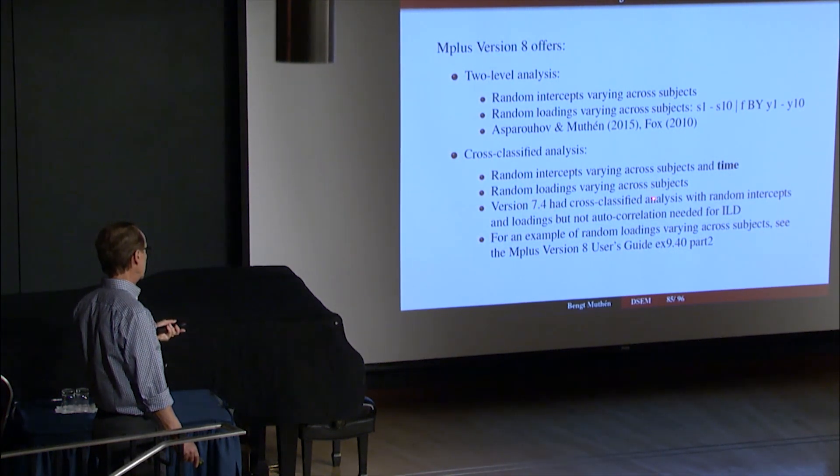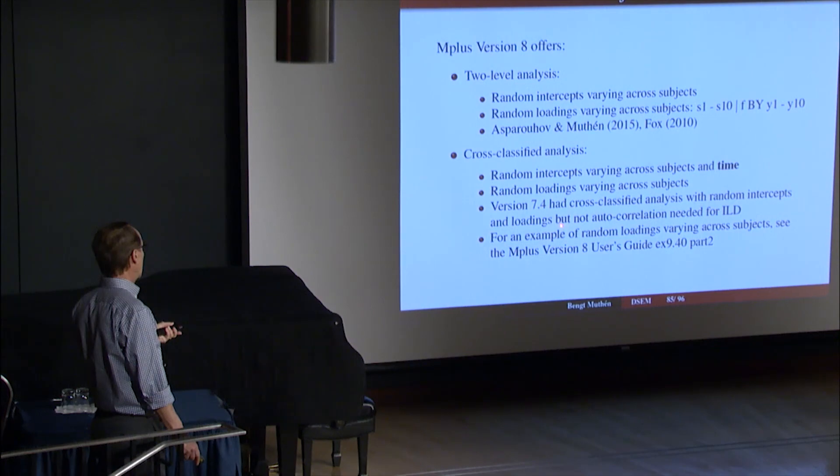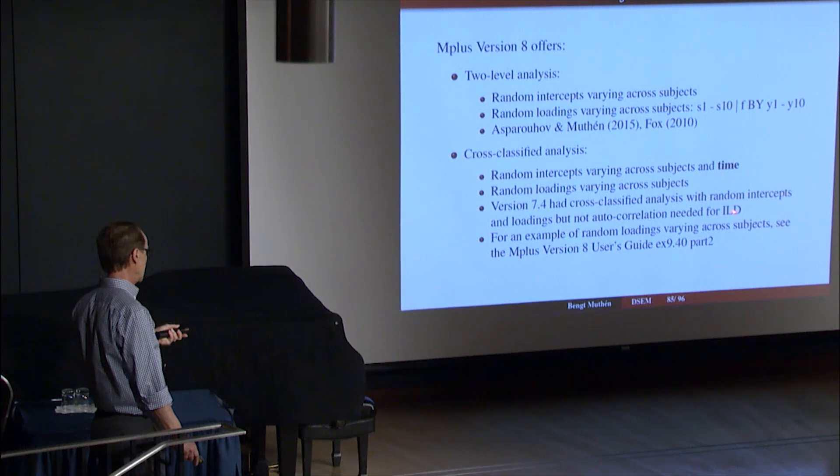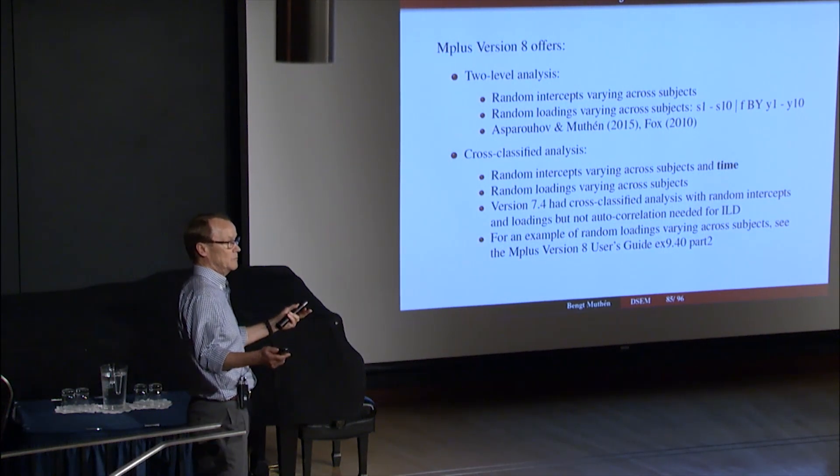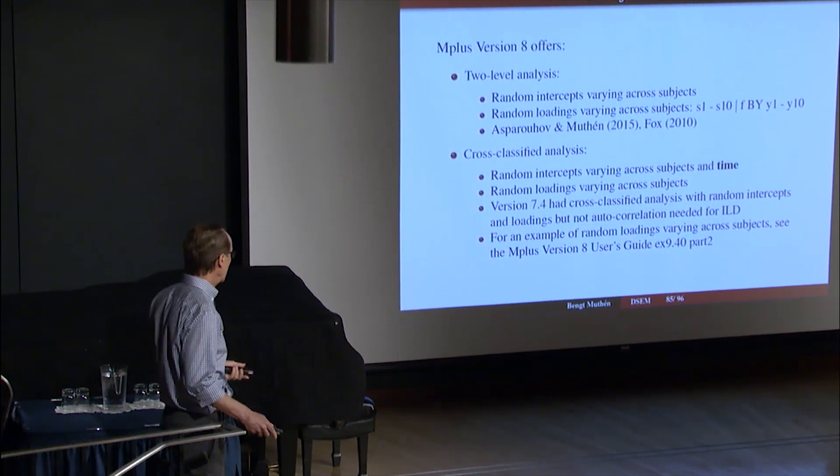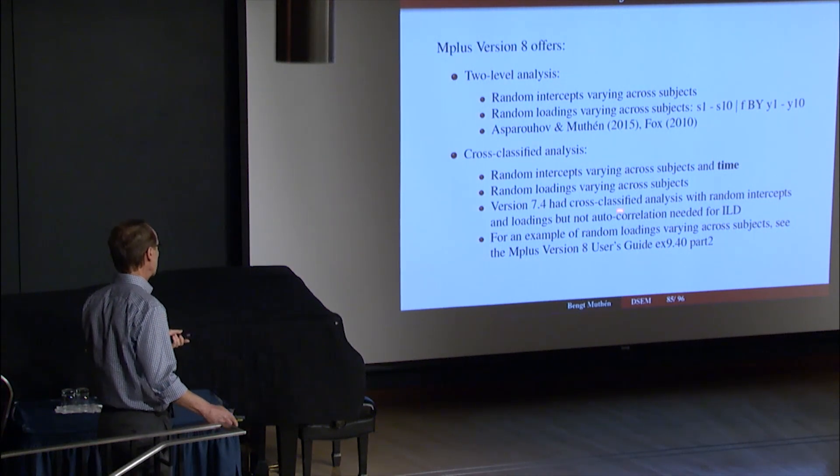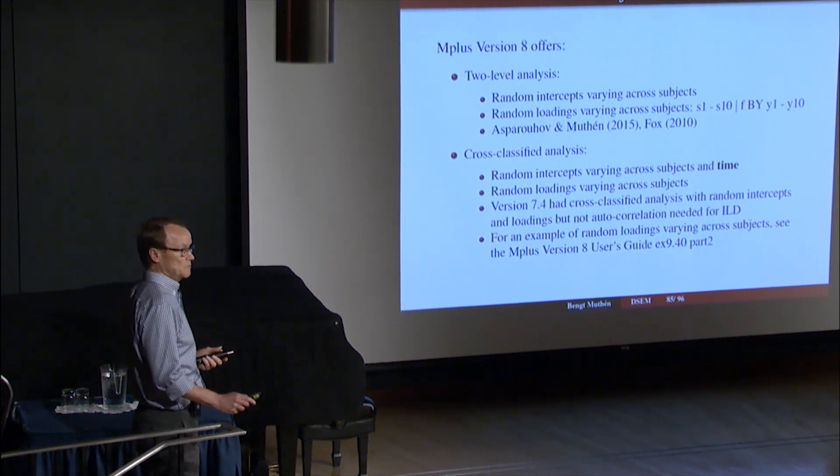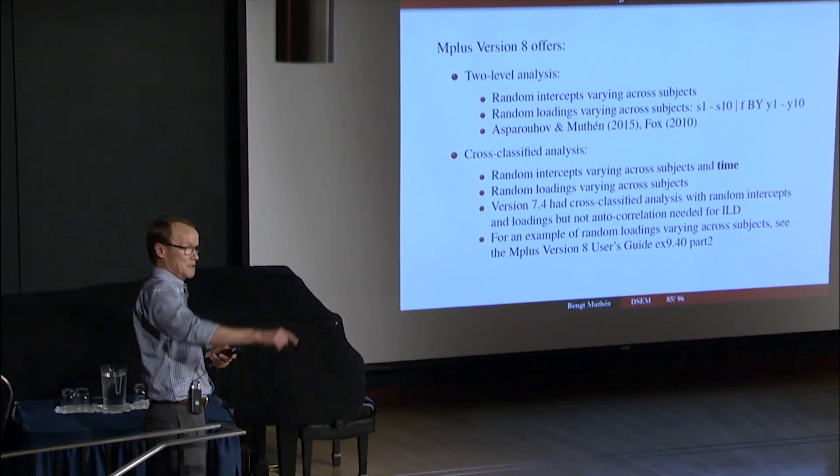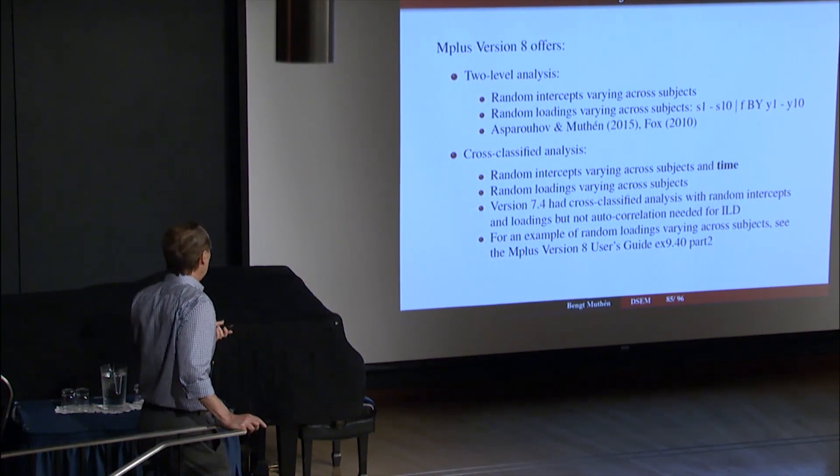Version 7.4 had cross-classified analysis with random intercept and loadings, but it did not have autocorrelation which is needed for intensive longitudinal data. And that cross-classified analysis needed many time points, but when you have many time points, they're often closely spaced in time, and therefore you need the autocorrelation. So we almost had it, but not quite, which was pointed out to us by Jean-Paul Laurence, which sits over there. He has had a hand in this.